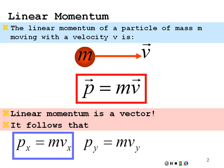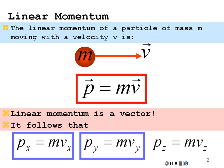The momentum in the Y direction is the mass times the velocity in the Y direction. Mass itself does not have X, Y, Z components — there are no components to the mass. It's simply a scalar, and our momentum is the mass times the velocity in any respective direction.